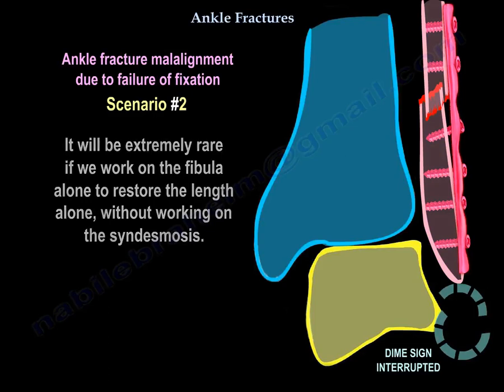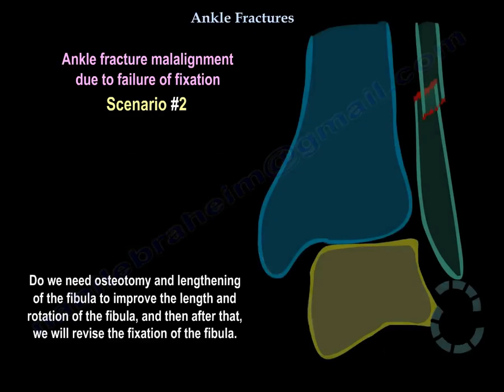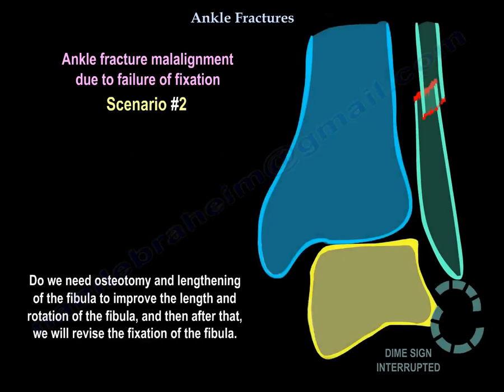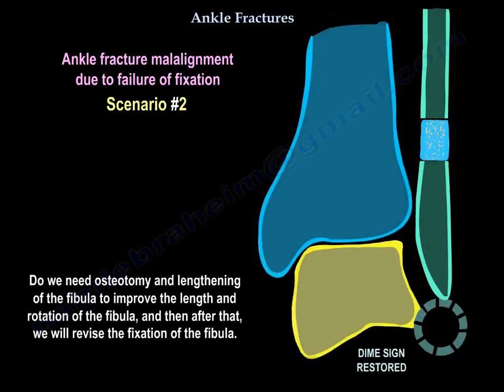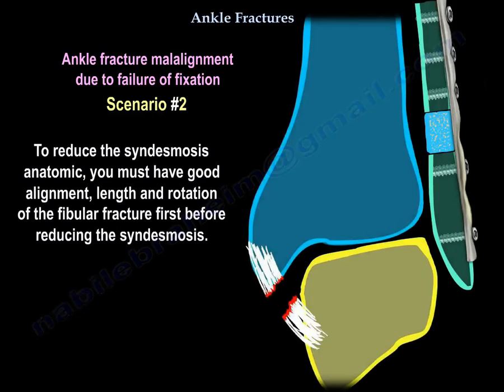It will be extremely rare to work on the fibula alone to restore length without also working on the syndesmosis. We need to perform an osteotomy and lengthening of the fibula to improve its length and rotation, then revise fixation of the fibula. To reduce the syndesmosis anatomically, you must first have good alignment, length, and rotation of the fibula fracture before reducing the syndesmosis.